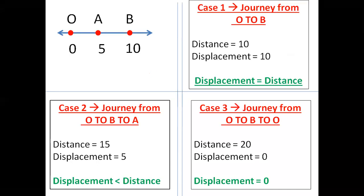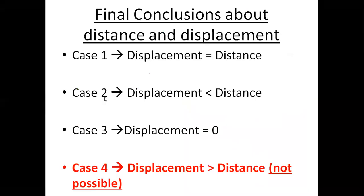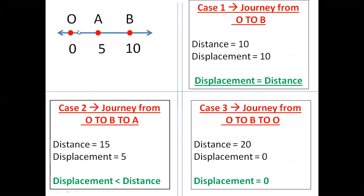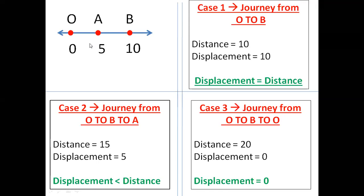First, focus on case number 1. In this slide I have decreased our journey length — previously it was from O to E, I have cut it down to B. I have just taken three elements so that it is easy to understand the relationship. In case 1, we are taking the journey from O to B. So distance is 10 and displacement is 10. Give me your response in the chat box — do you agree?